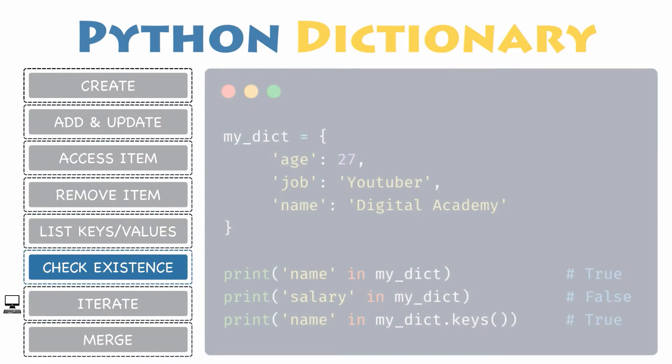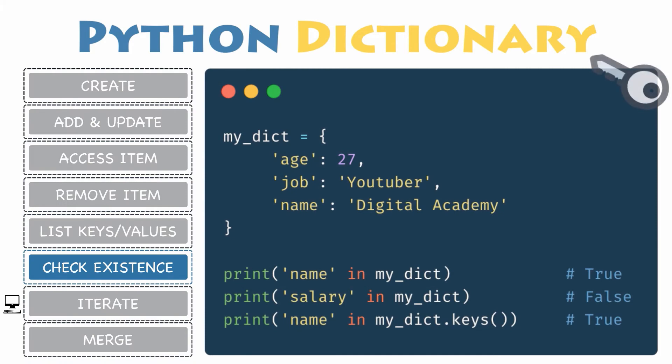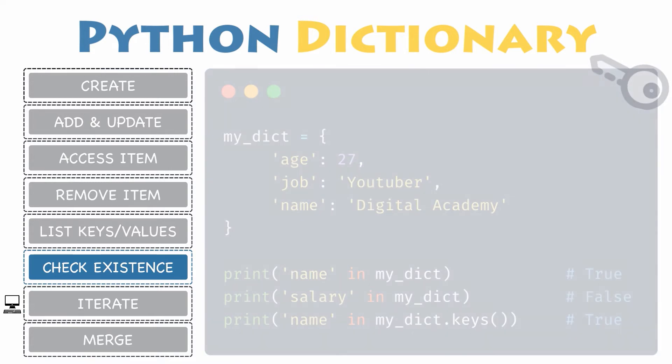If you want to know if a key exists in a dictionary, use the in and not in operators with the if statement. You can also use the keys method to check whether your key is part of the dictionary's keys.